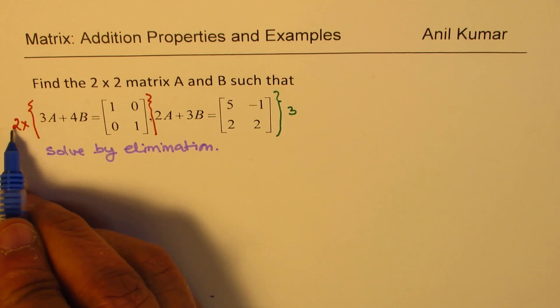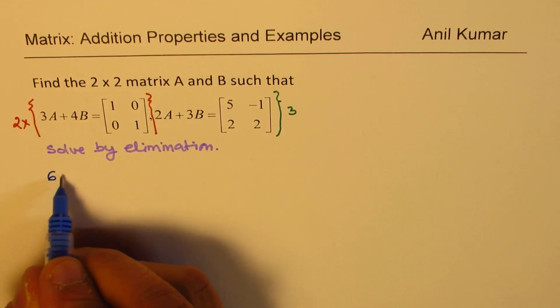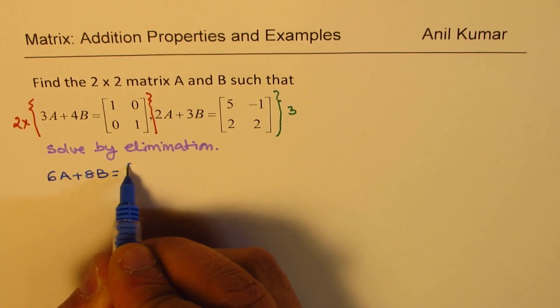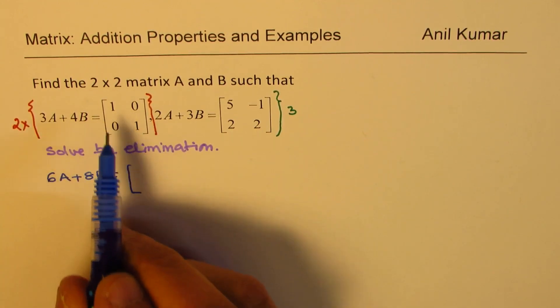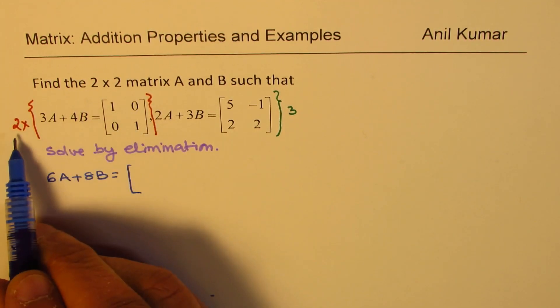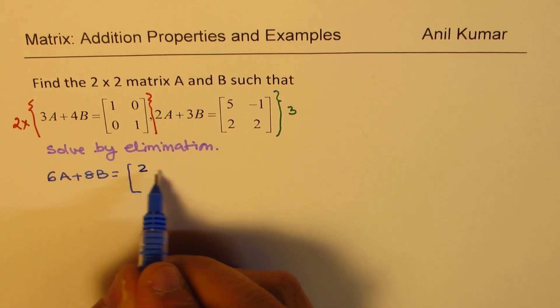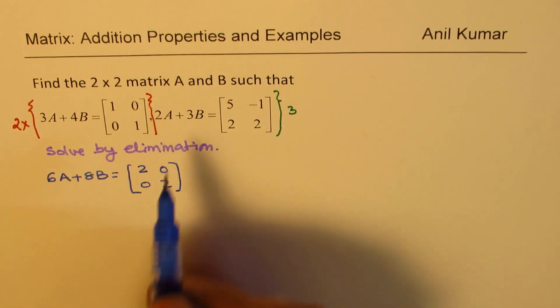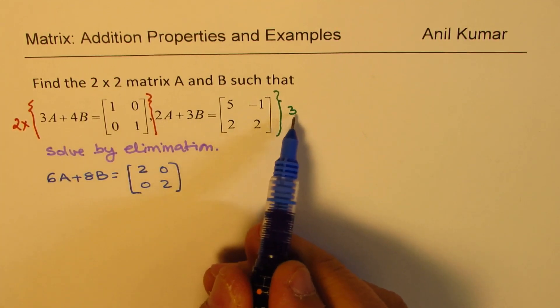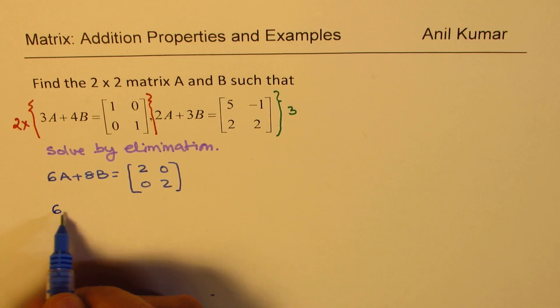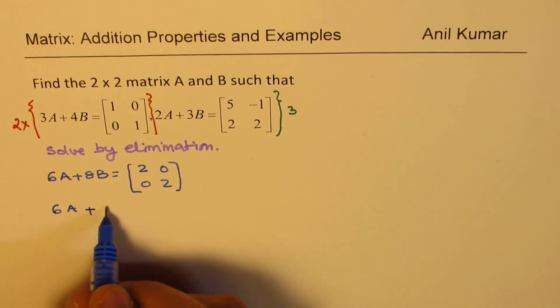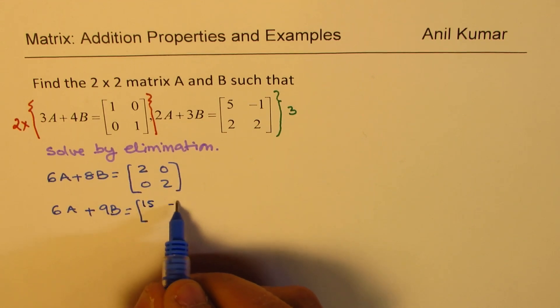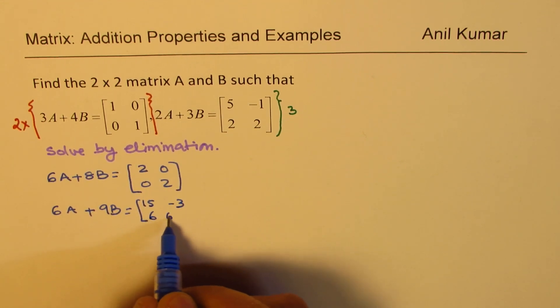So what we get here is times 2, we get 6A plus 8B equals [2 0; 0 2]. Scalar multiple, each and every element inside is now going to get multiplied by 2. And for the other matrix, times 3, we get 6A plus 9B equals [15 -3; 6 6].